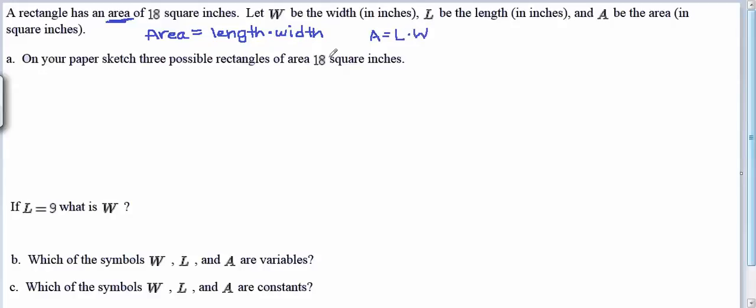So we're told here that the total area is 18 square inches, and now they ask us to sketch three possible rectangles that would have an area of 18 square inches. So we know that whatever the length and the widths are, when we multiply them together, it needs to come out to be 18.